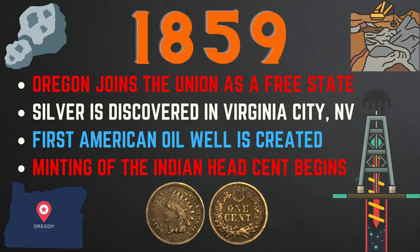In 1859, Oregon joined the union as a free state. Silver was discovered in Virginia City, Nevada at the Comstock Lode, which led to the eventual mining of almost 7 million tons of pure silver — it is likely that many Morgan silver dollars were produced using this silver. Also that year, the first American oil well was drilled by Edwin Drake in Pennsylvania, and minting of the Indian Head cent began.